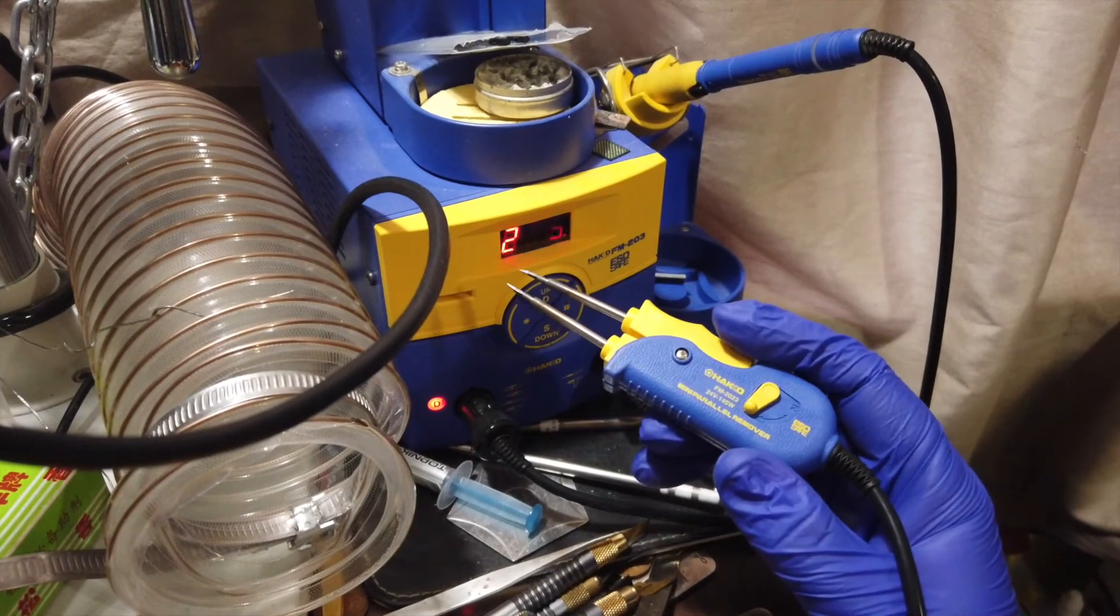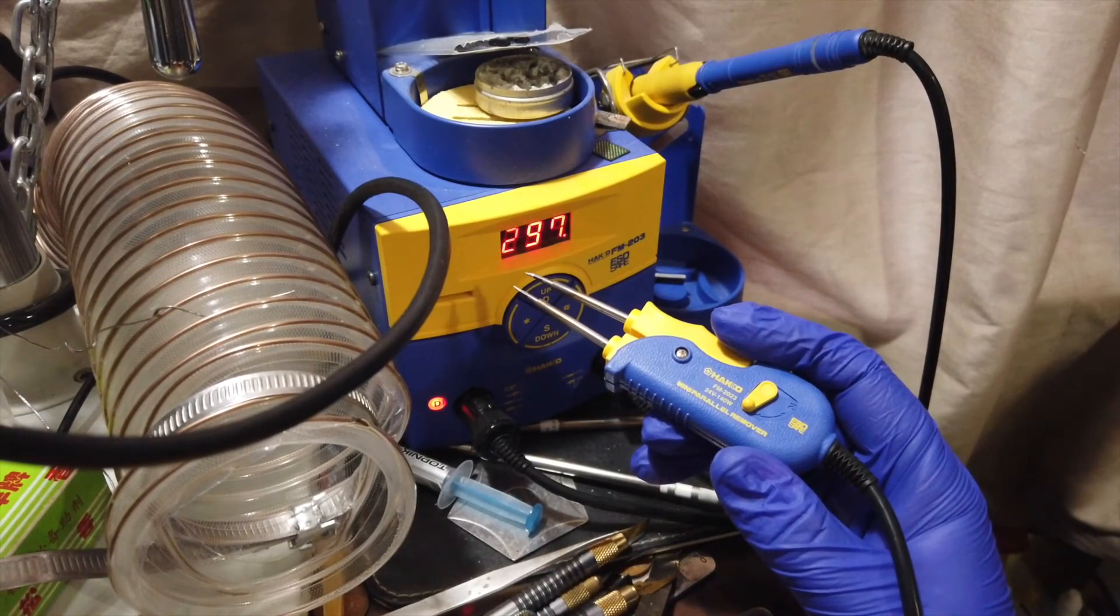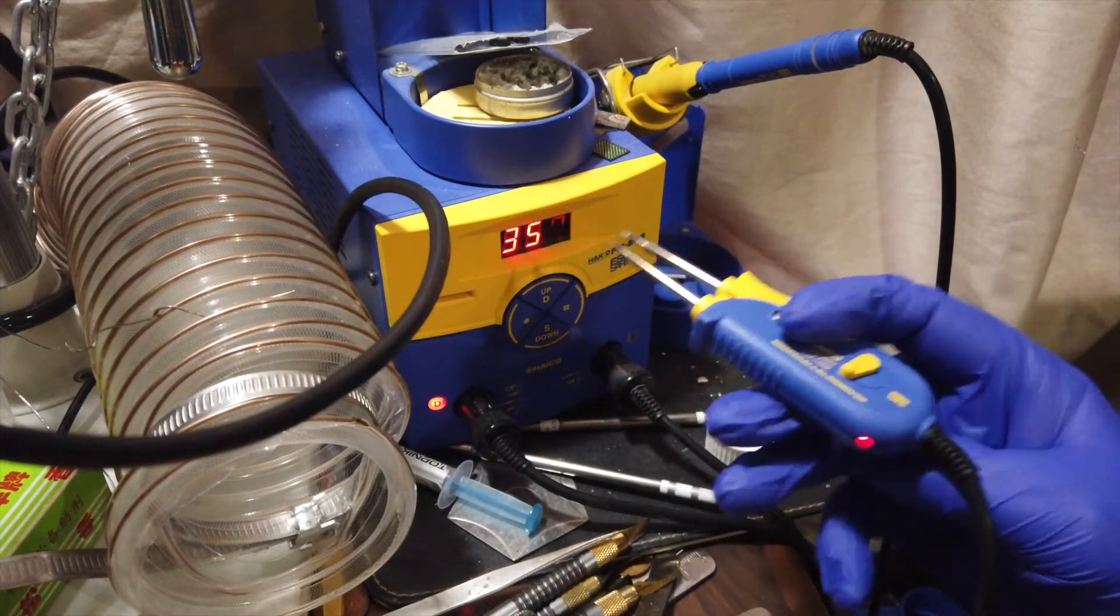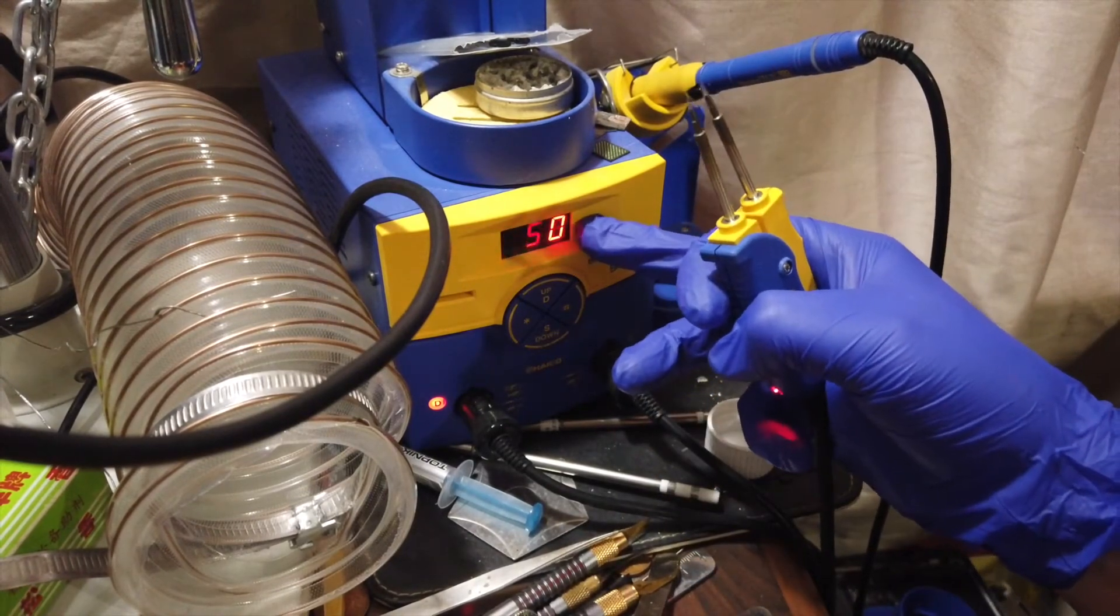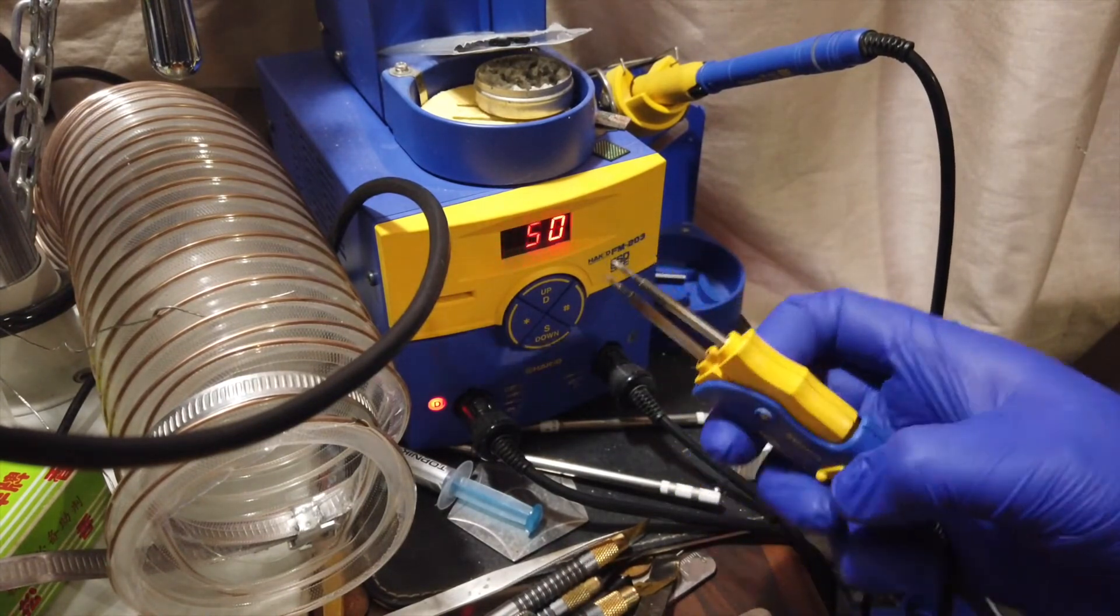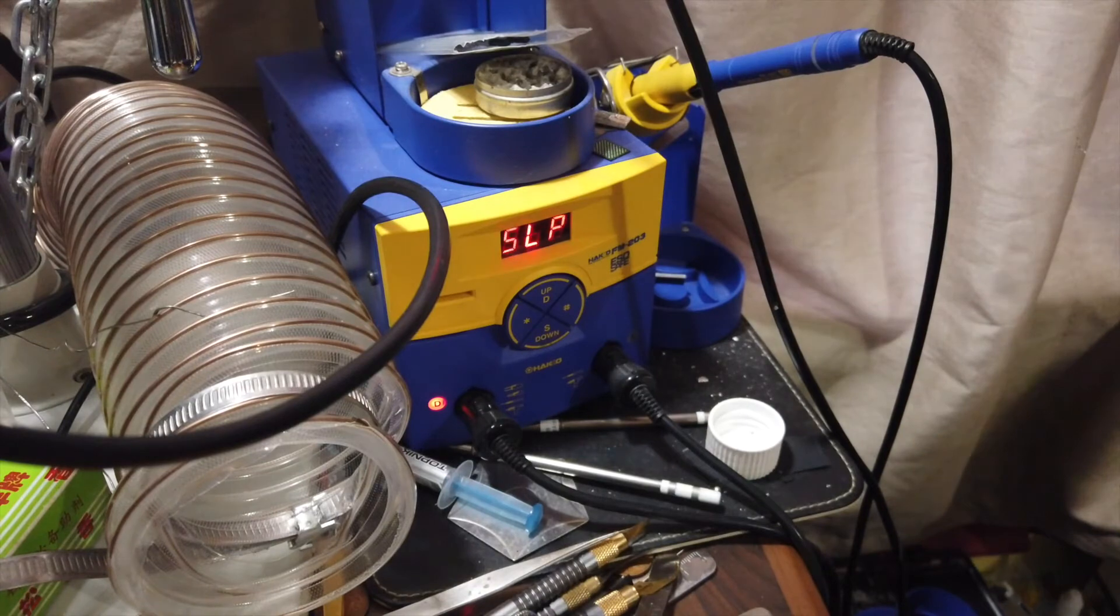So when you lift it off now. And it goes to 350. It's about to reach temperature. Right. It's at 350. But in reality. It's at 400 Celsius. Because you've got an offset. Of 50 positive Celsius.